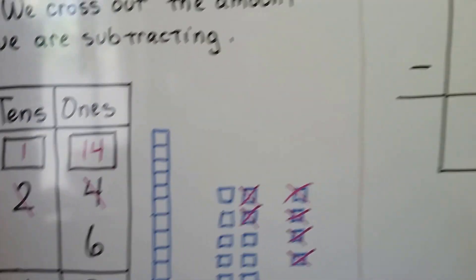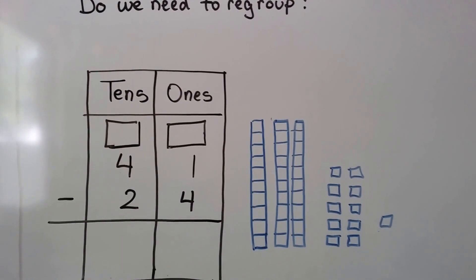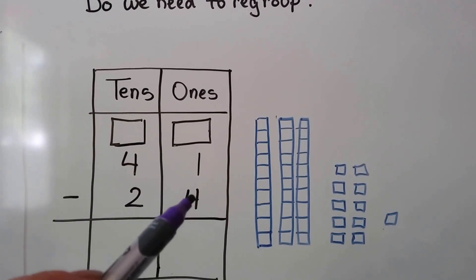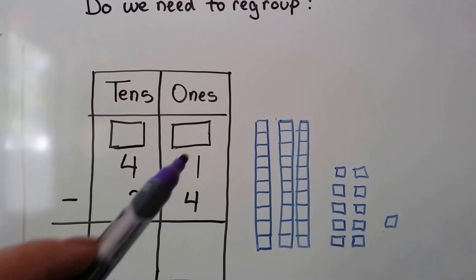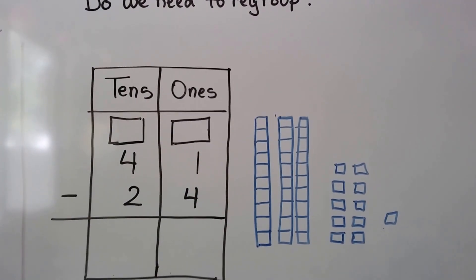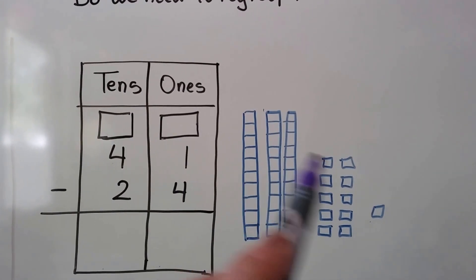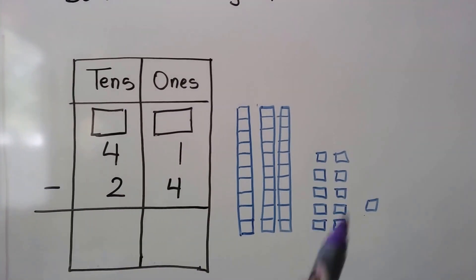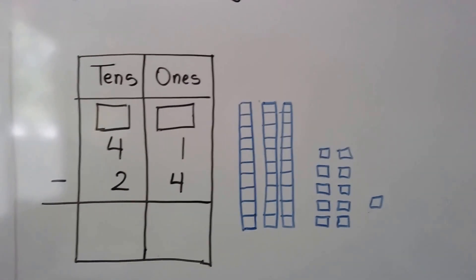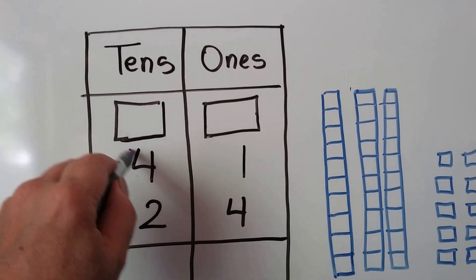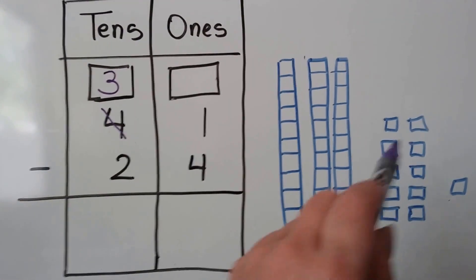So let's use pictures to help us. Do we need to regroup? We look at the ones place. This is a four and that's a one. This is larger than the ones place of the minuend, so yes, we're going to have to regroup. We have four tens and one one. One of the tens is broken up into ones for the ones place. The four tens becomes three tens, and the one becomes an eleven.